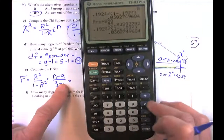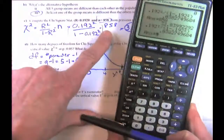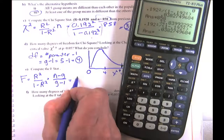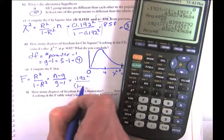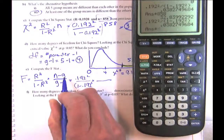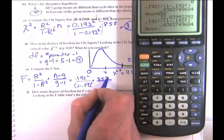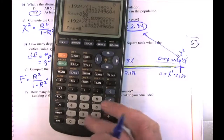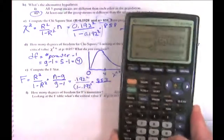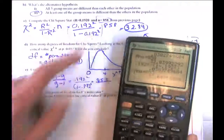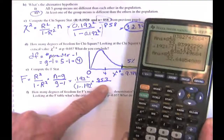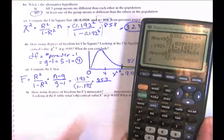Instead of multiplying by 858, we multiply the numerator by 853 — that's n minus g. We get 32.64, just a tiny bit less than 32.84. It's analogous to the relationship between Z and T — a little bit smaller.